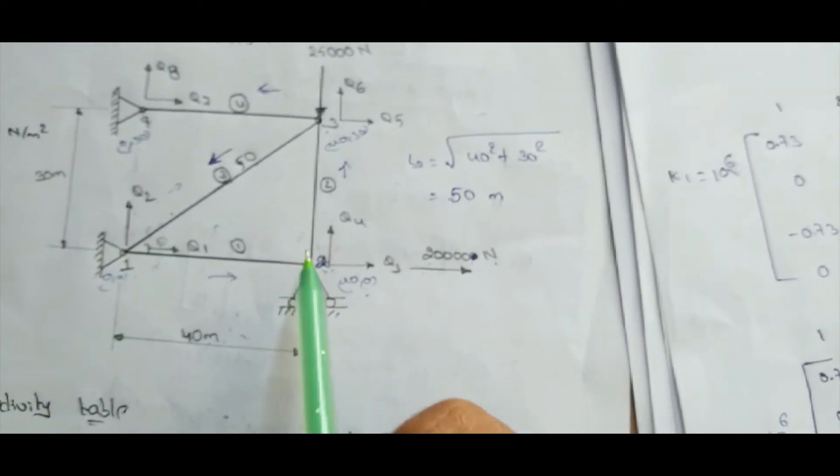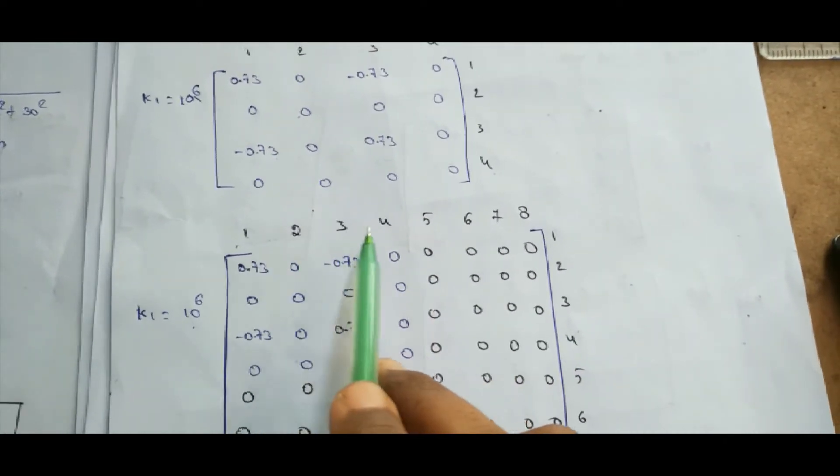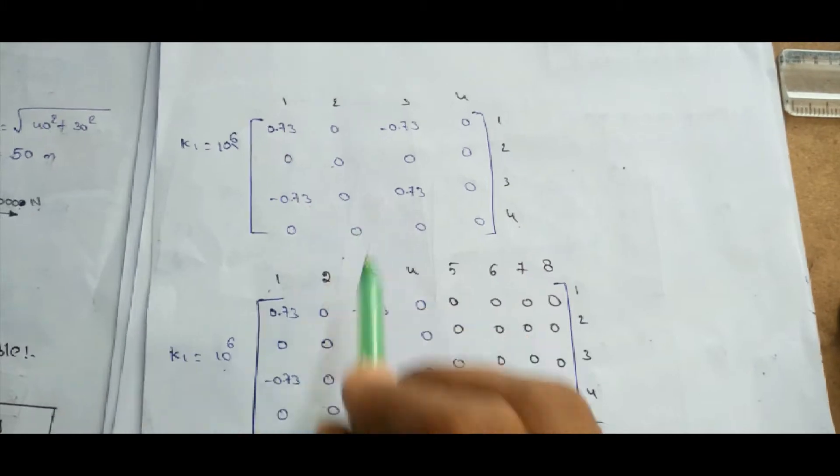The element has displacements Q1, Q2, Q3, Q4. To convert to the global homogeneous matrix, write 10⁶ outside and open the bracket. Indicate displacement numbers 1 through 8 at the top and right side. Since element 1 only involves displacements 1, 2, 3, 4, columns and rows 5, 6, 7, 8 are all zero. The remaining 4×4 block is filled with the element stiffness matrix values.